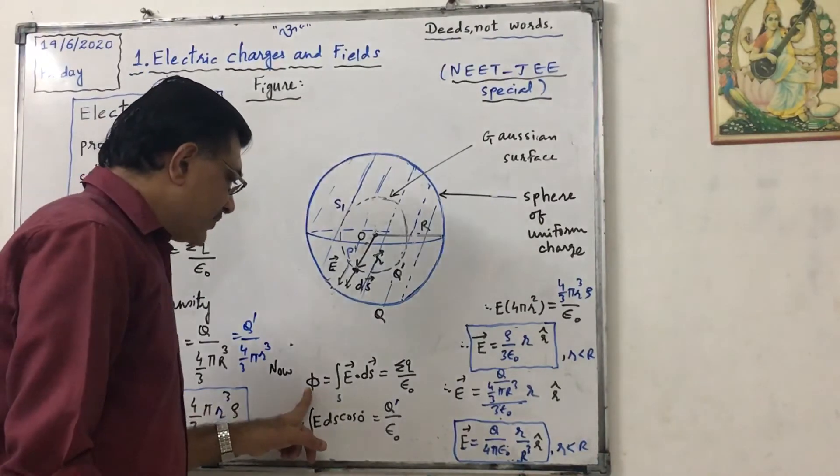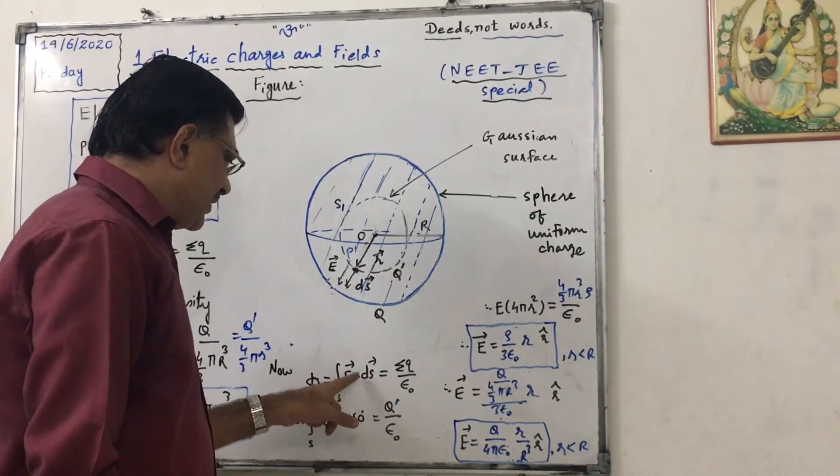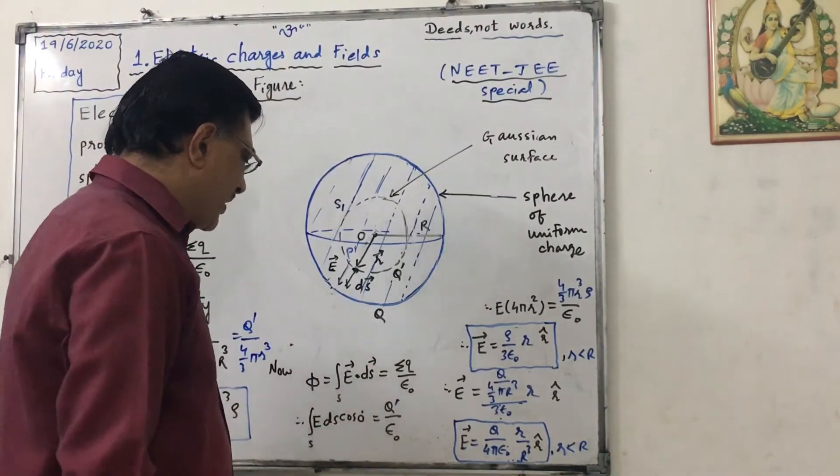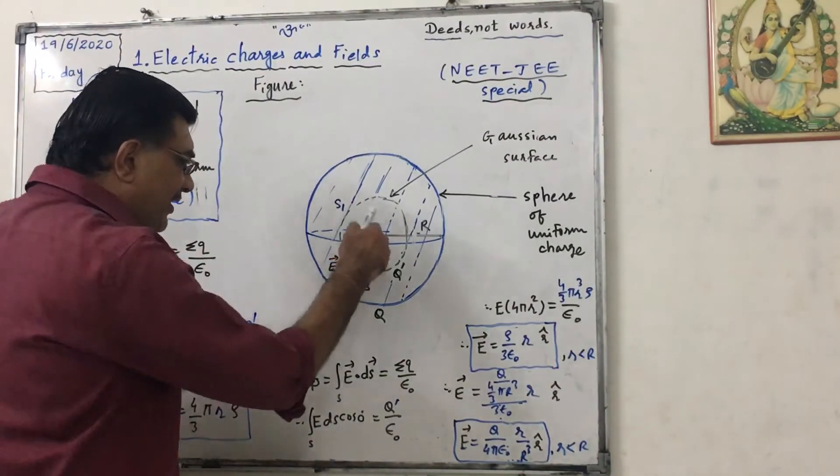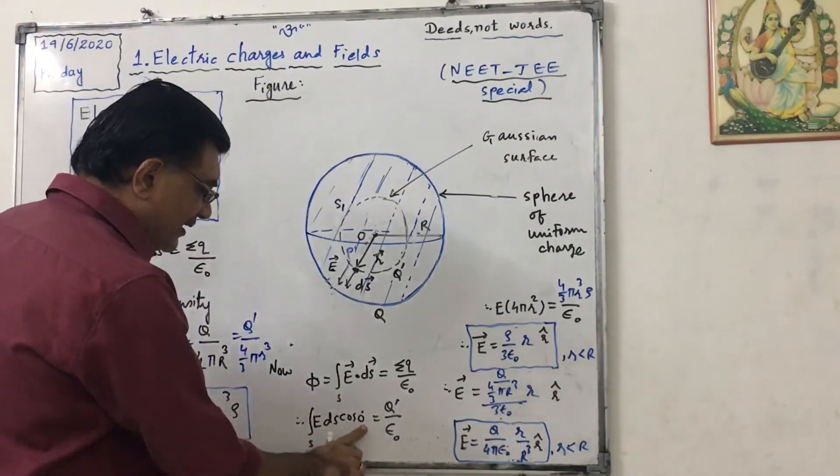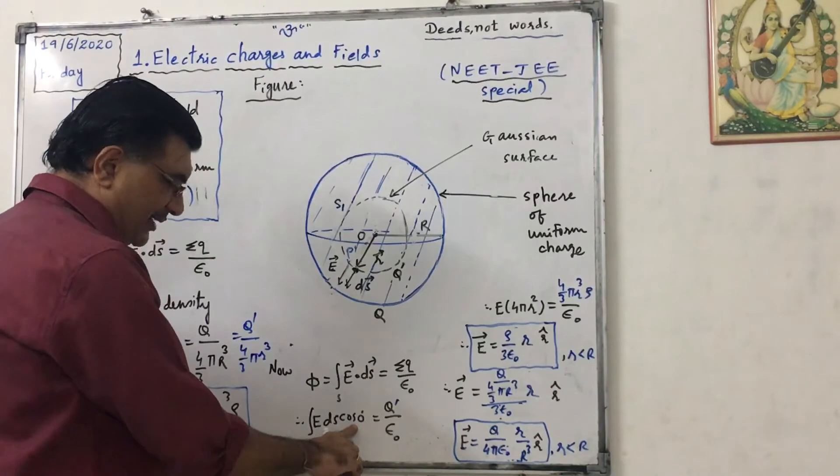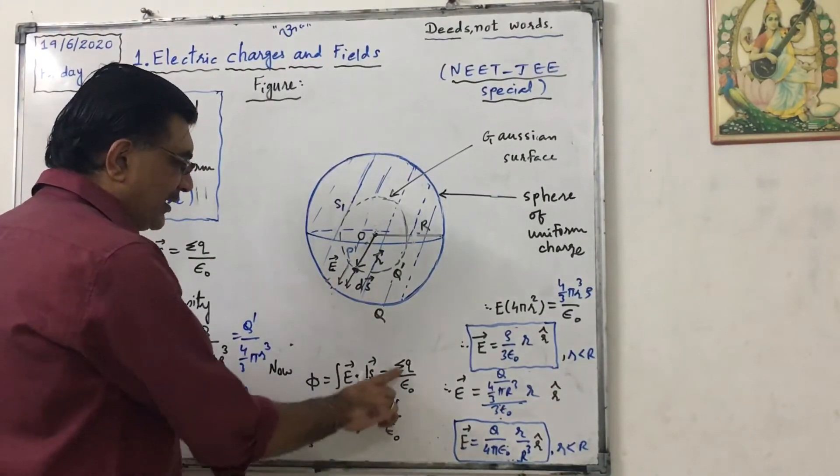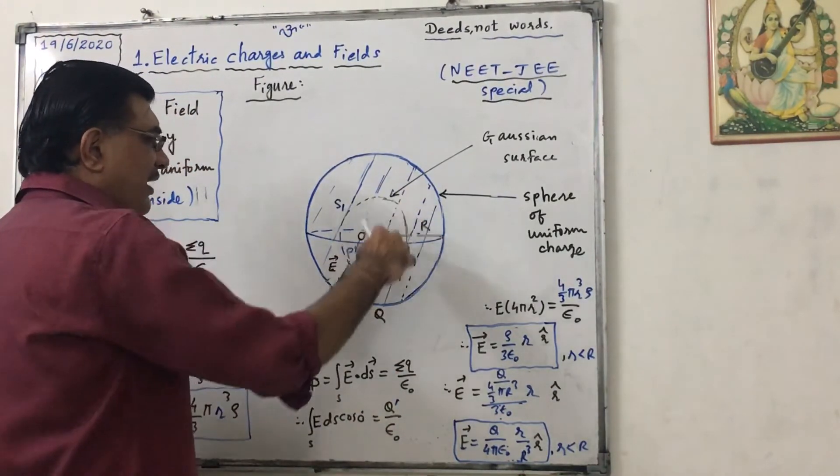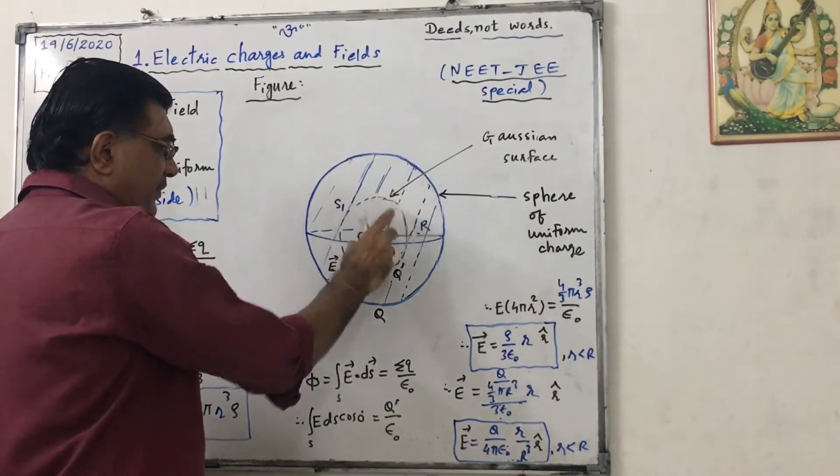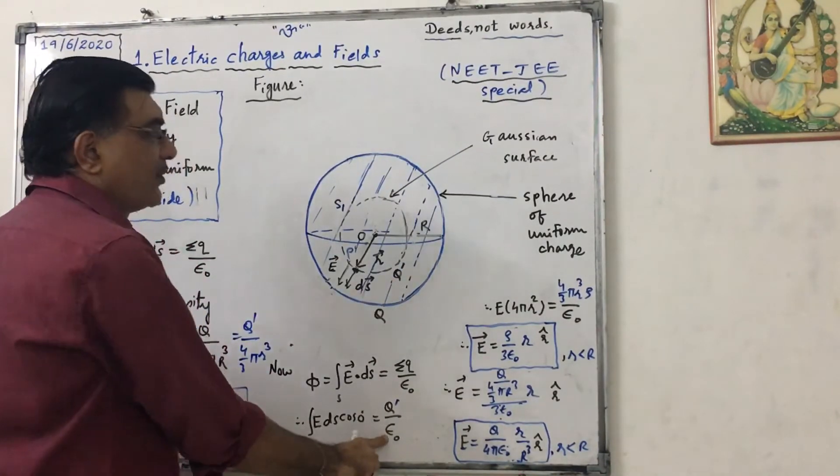Now again, phi equals to surface integration vector E dot vector ds equals to q upon epsilon naught. Here E and ds are in same direction, so angle is 0, so E ds cos 0, surface integration. The q enclosed in this small sphere is q dash upon epsilon naught.